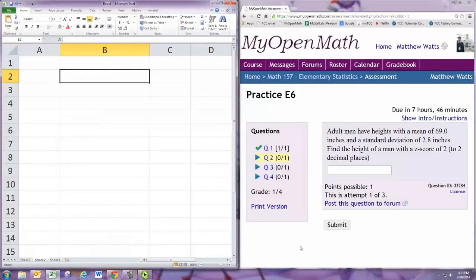In this video, we'll see how to do practice problem 2 from exercise 6. Adult men have heights with a mean of 69 inches and standard deviation 2.8 inches. Find the height of a man with a z-score of 2.